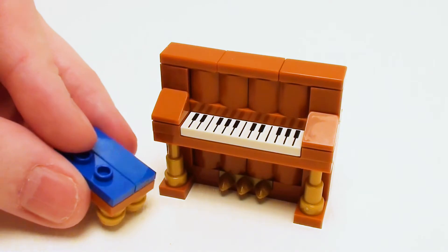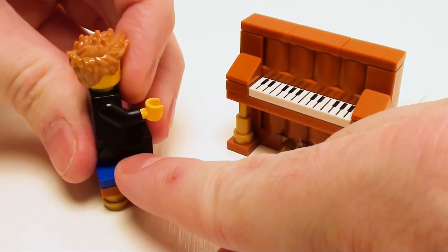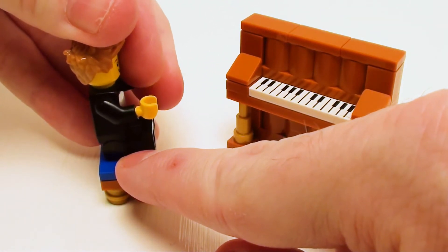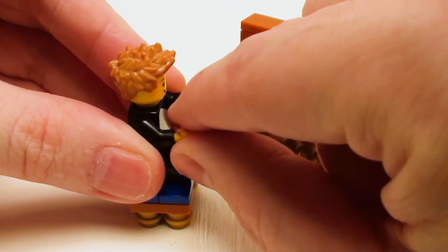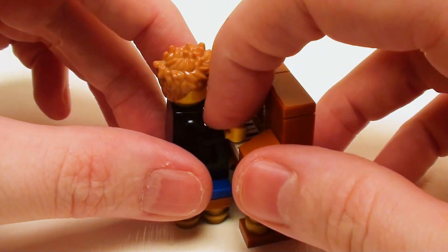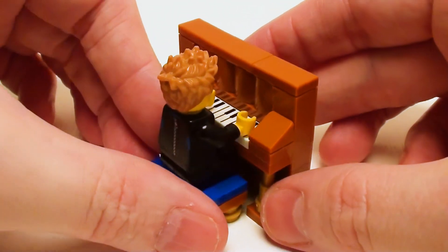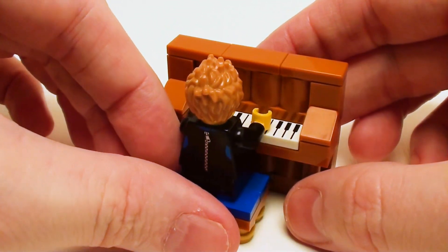Now the piano is scaled for minifigures. So here I have Jay the Surfer. He's going to pretend that he knows how to play the piano. I myself, I don't know how to play the piano, so I'm just going to pretend. So there we go. It's the right height. Looks pretty good. Be great for any LEGO home.